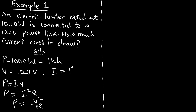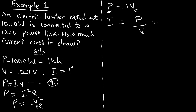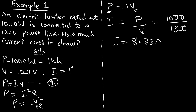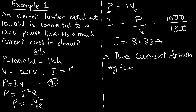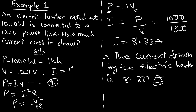Looking at the available values, we use P = IV. We have P and V, so we solve for I: current I equals power divided by voltage, which is 1000 divided by 120. Solving this gives us 8.33 amperes. So the current drawn by the electric heater is 8.33 amperes.